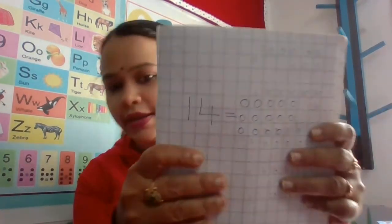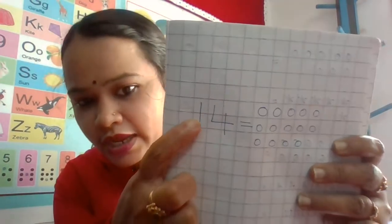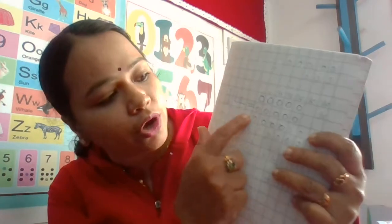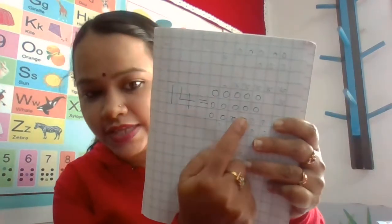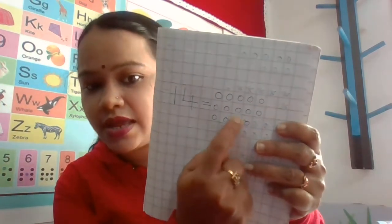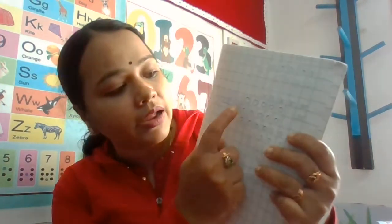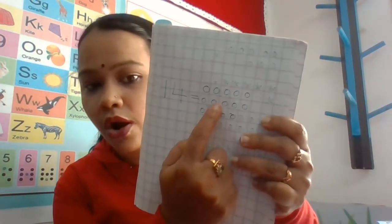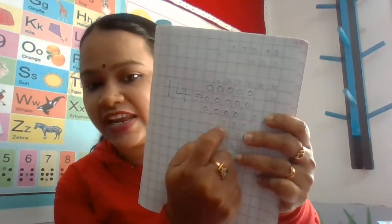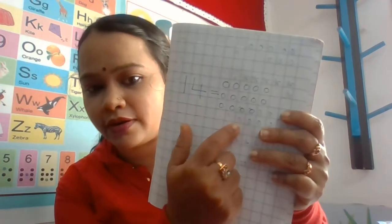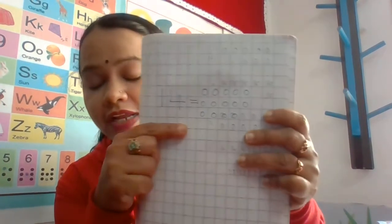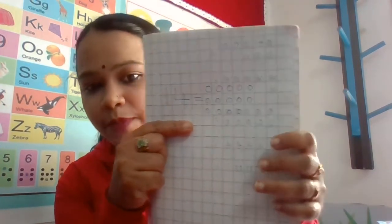After writing that, you have to write number 14 and draw 14 circles, and color all the circles in a 5, 5 pattern. You have to put the circles in a 5, 5 pattern.